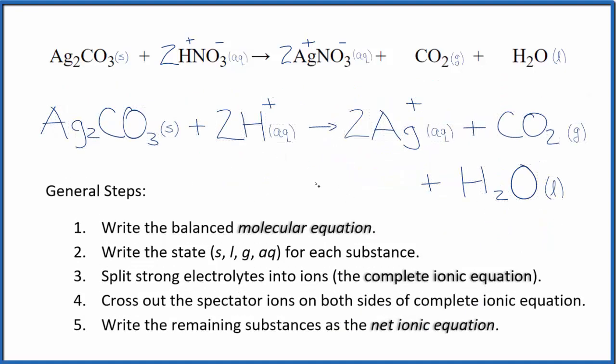So this is the balanced net ionic equation for silver carbonate plus nitric acid. If you count the atoms up, they're balanced. And if you look at the charge, it's balanced as well.